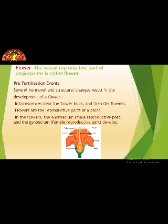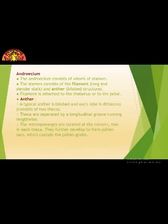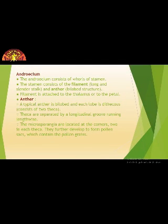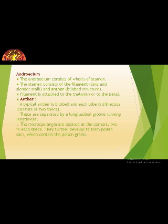Flowers are the reproductive parts of a plant. In the flowers, the androecium — that is the male reproductive part — and the gynoecium — that is the female reproductive part — develop. We will see them one by one. First, we will understand what the androecium is and how male gametes form in it. Then we will see the gynoecium and how female gametes form in it. Androecium is a group of stamens, which are the male reproductive part. Androecium consists of whorls of stamens.